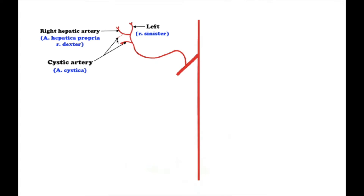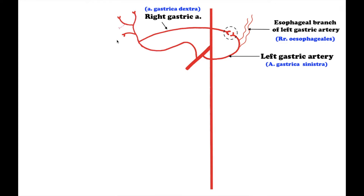The common or proper hepatic artery gives off a branch to the lesser curvature of the stomach, the right gastric artery, arteria gastrica dextra, which stretches from right to left to meet the left gastric artery. The left gastric artery extends to the lesser curvature of the stomach and gives off branches to the stomach and the abdominal part of the esophagus.